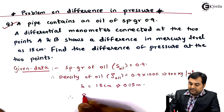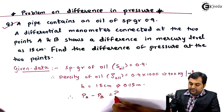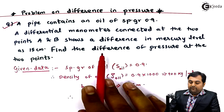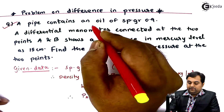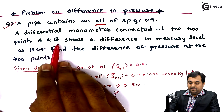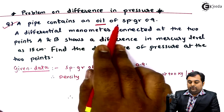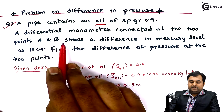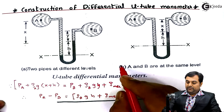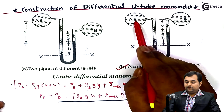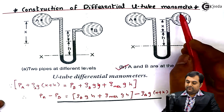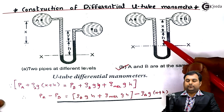The question asks for the difference of pressure, written as P_A minus P_B, where P_A is the pressure in pipeline A and P_B is the pressure in pipeline B. Since we have only one liquid — oil — both pipe A and pipe B carry oil of specific gravity 0.9. Since the fluid is the same, we refer to figure B, which applies when fluids are at the same level.